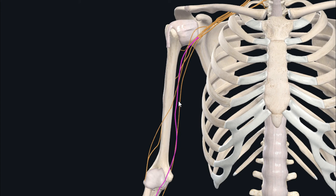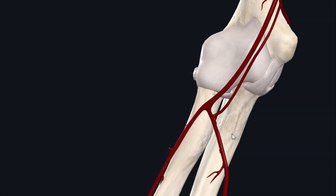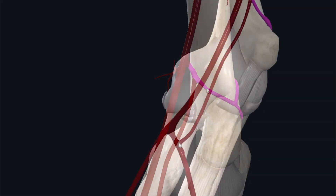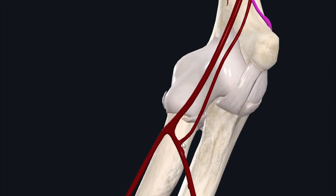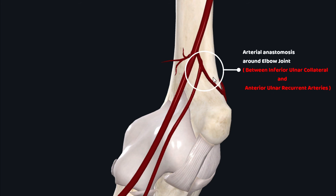The pronator teres muscle receives its nerve supply from the median nerve, which passes between the two heads of the pronator teres to enter the anterior compartment of the forearm. Its arterial supply comes from two main arteries: the brachial artery, which supplies it via a branch called the inferior ulnar collateral artery, and the ulnar artery, which supplies it via the anterior ulnar recurrent artery. These two branches form an anastomosis around the elbow joint.